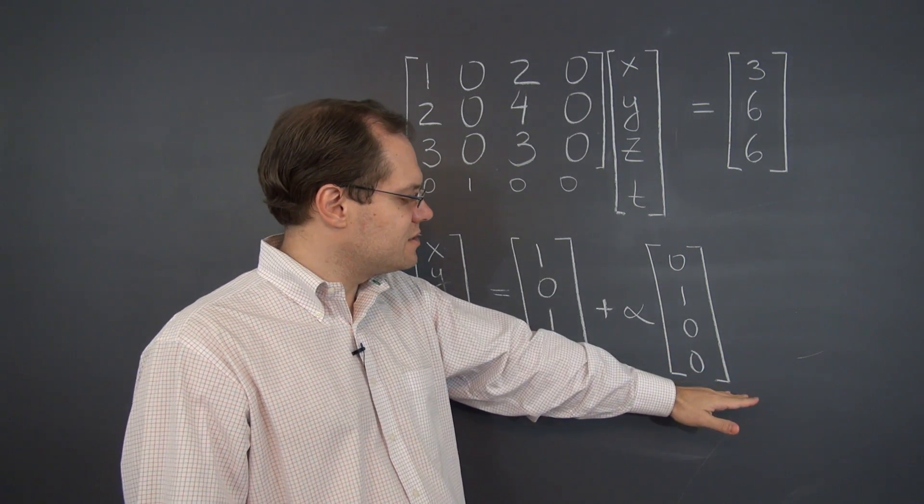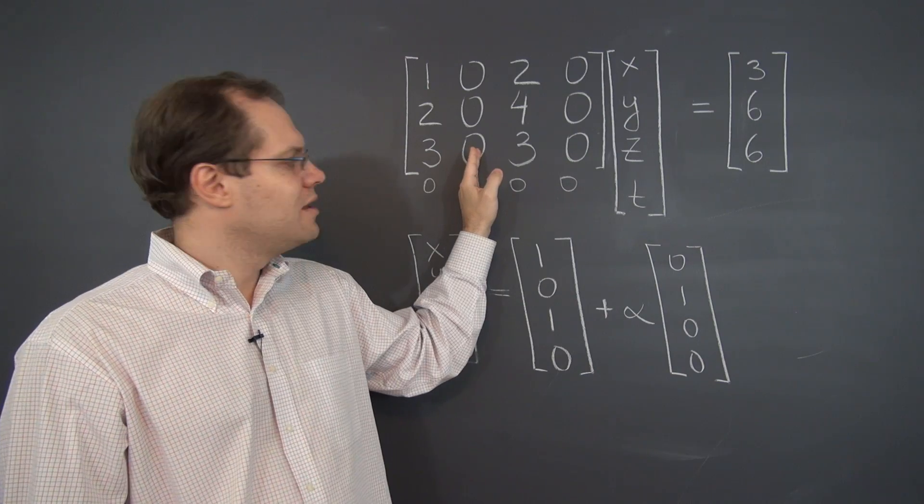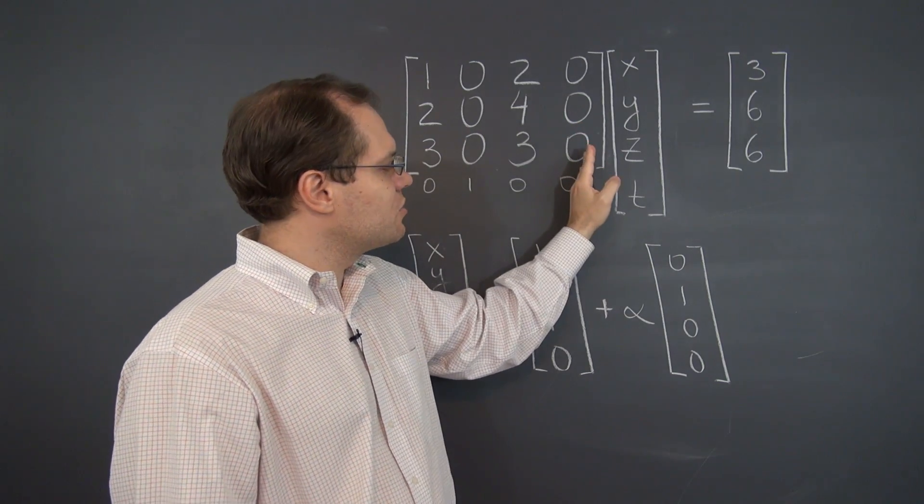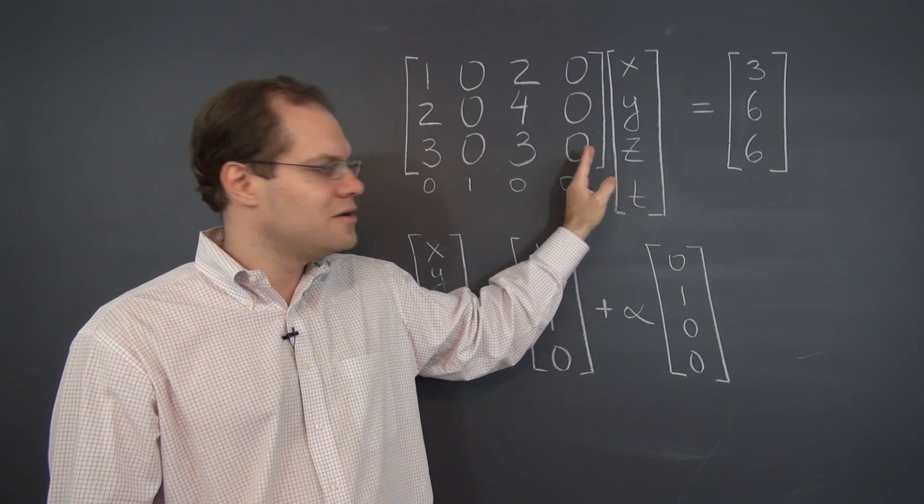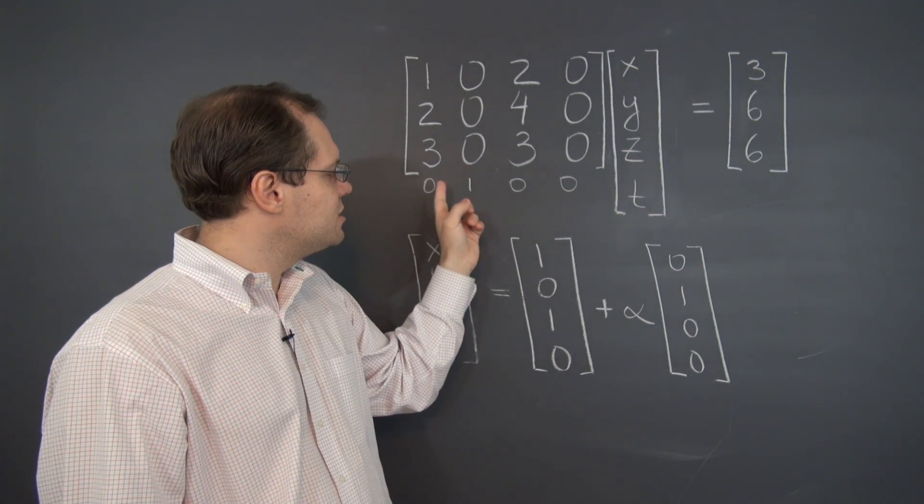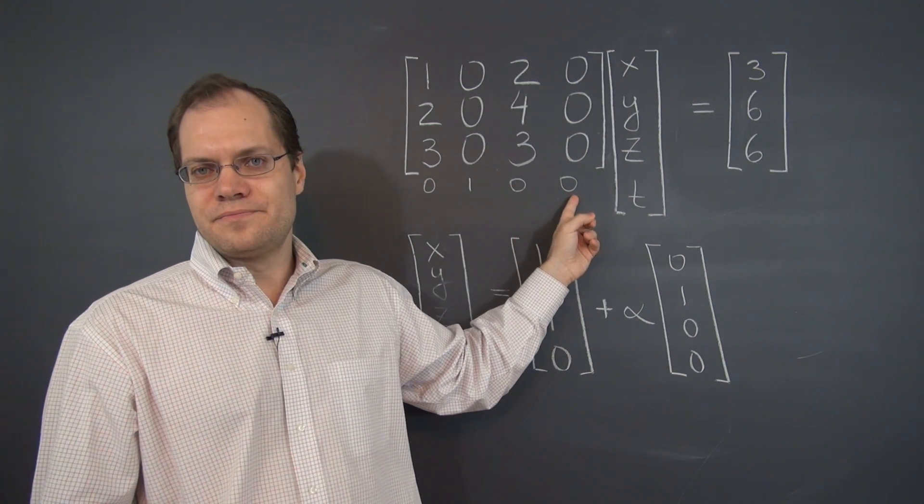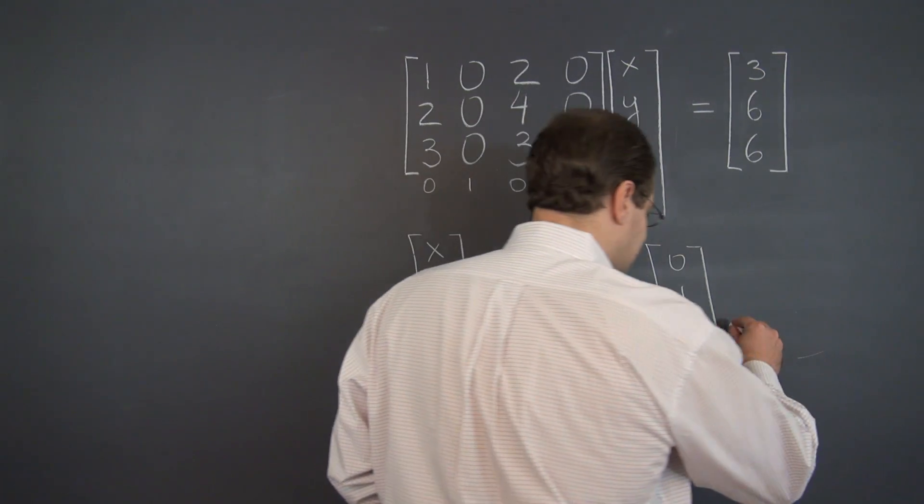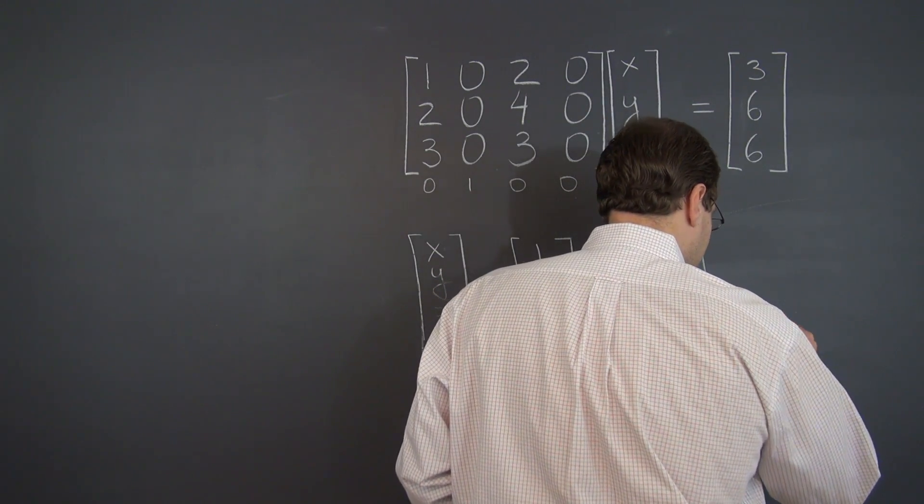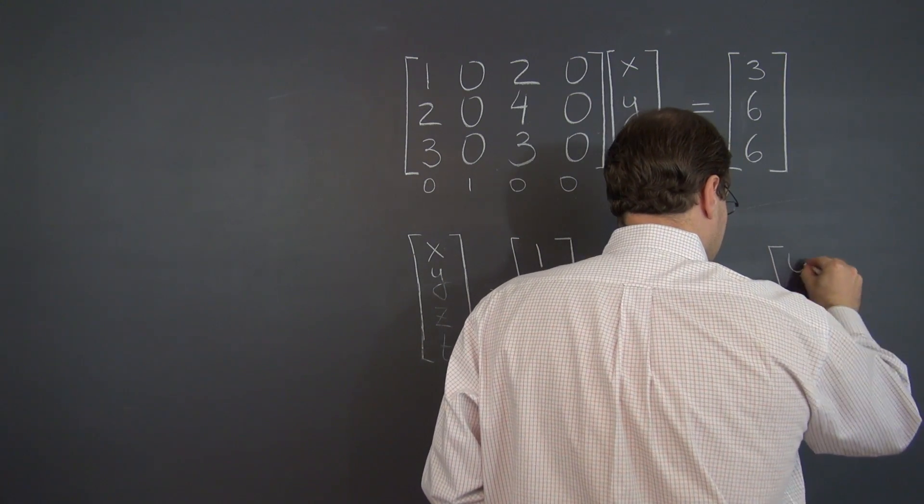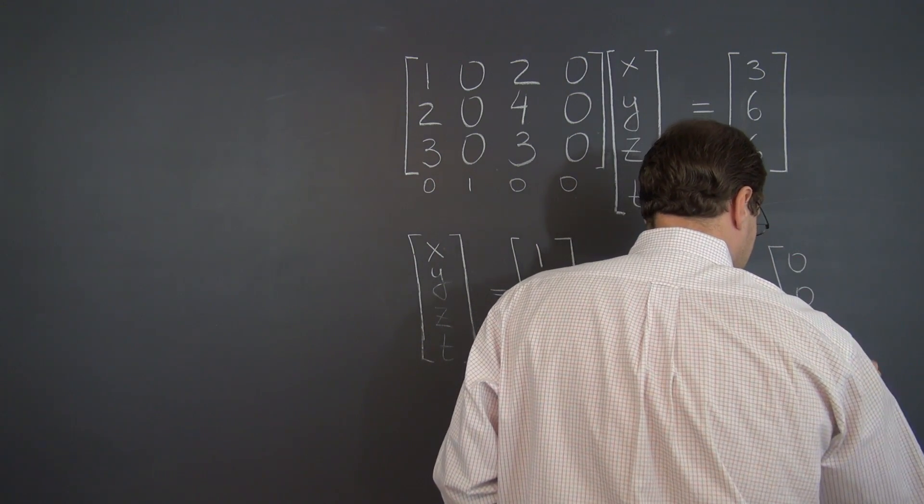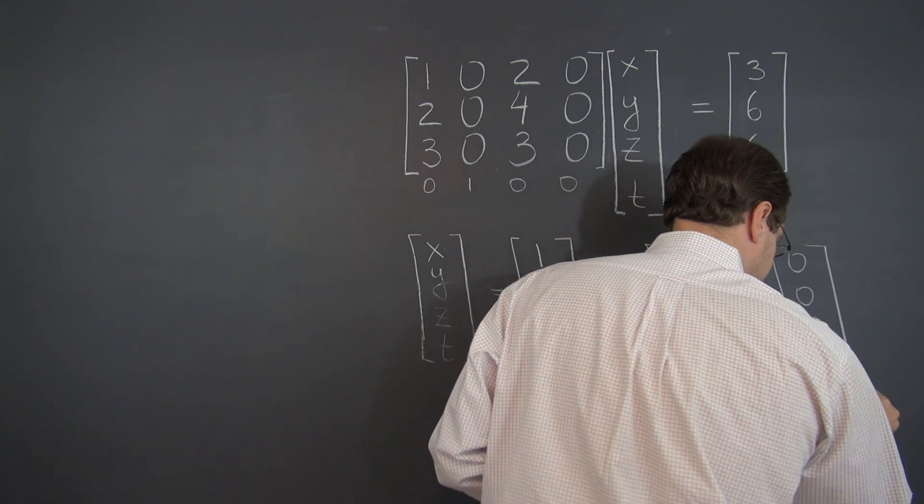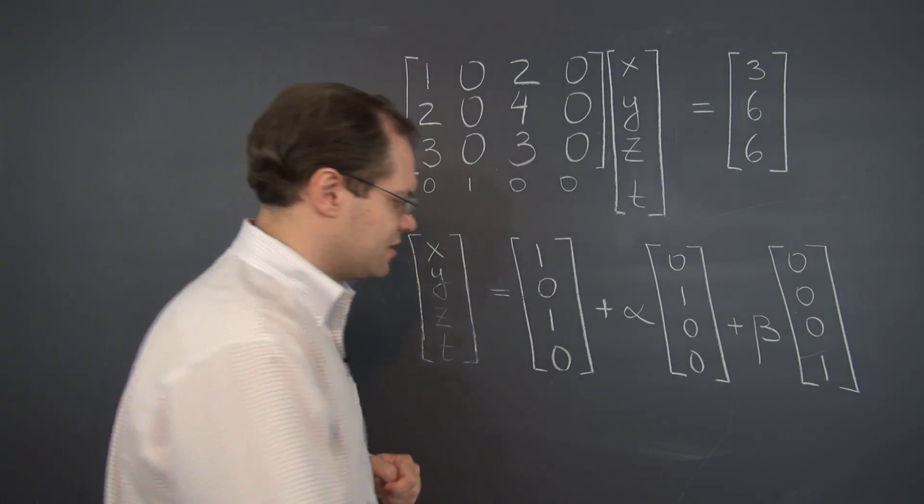So this is the vector that corresponds to this column being zero. And of course there's another one that corresponds to this column being zero. And that linear combination would be zero, zero, zero, one. So that's the other element of the null space. Our null space, in this case, is two-dimensional. And here's our null space.